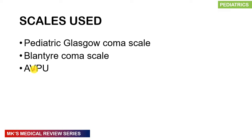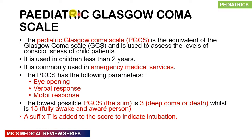The Pediatric Glasgow Coma Scale is equivalent to the adult GCS and is used to measure the level of consciousness in children, particularly below age 2, though it can be used above age 2 and in emergency medical services. It has 3 parameters: eye-opening, verbal response, and motor response. Maximum score is 15 — fully awake and aware — and the lowest is 3, indicating deep coma or death. A suffix T can be added to indicate if the patient is intubated.